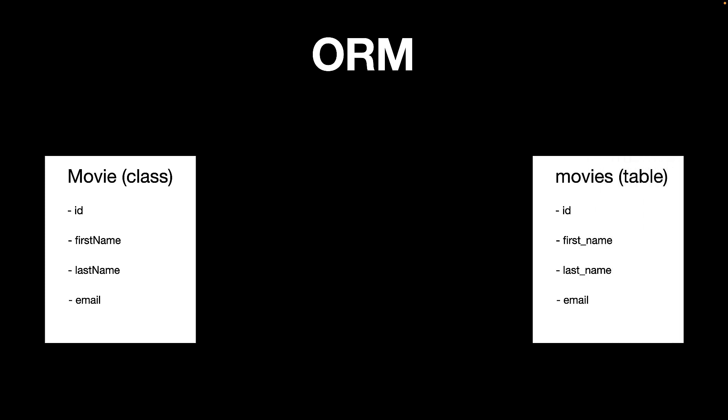In ORM, we have a class — a class can be a movie class, or any entity that you want defined. We're going to create that class since we're using Fluent in Swift. That class can have properties like ID, first name, last name, and email. The basic idea of ORM is that this class — the movie class — will get special functionality so it can talk to, insert, and perform operations on the movies table.